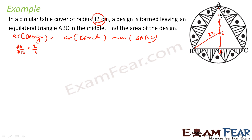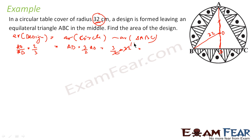We have AO, so we can find AD. AD is nothing but 3 by 2 into AO, and that is 3 by 2 into 32. AO is the radius, which is 32. This comes out to be 48 cm. So AD is 48 cm — that is the height of the equilateral triangle.